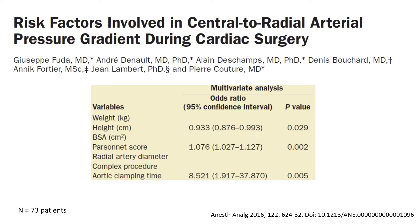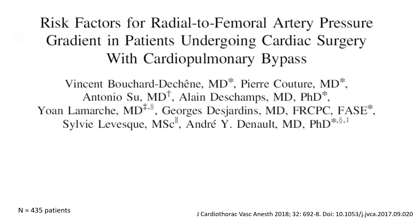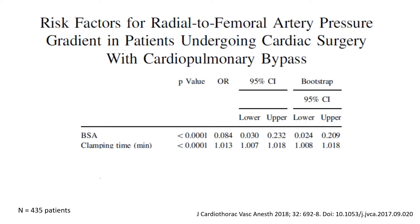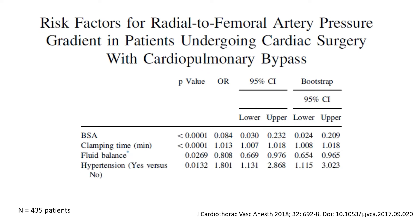However, on multivariate analysis, only height, personnel score, and aortic clamping time were significant factors. In 2018, we reported a much larger retrospective study that included 435 patients. The prevalence was 34%. Patients with a gradient had a longer hospital stay and a tendency for higher mortality. The most important risk factors were again small body surface area and longer clamping time, but also fluid balance and hypertension were important risk factors.